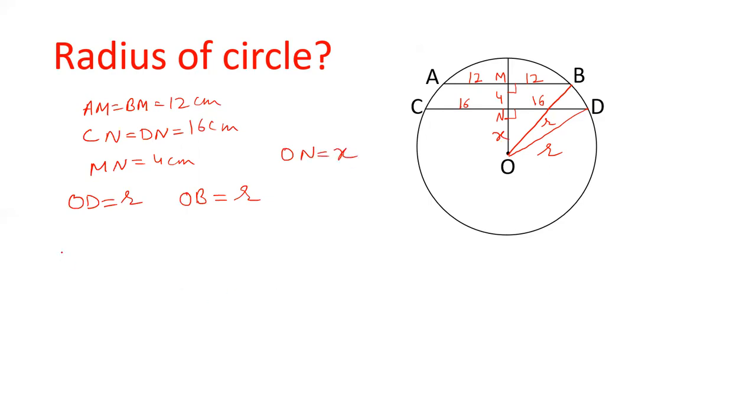Let us take triangle OND. OD square will be equal to ON square plus DN square. OD is given as R square, ON is X square and DN is 16 square. So R square is equals to X square plus 16 square.